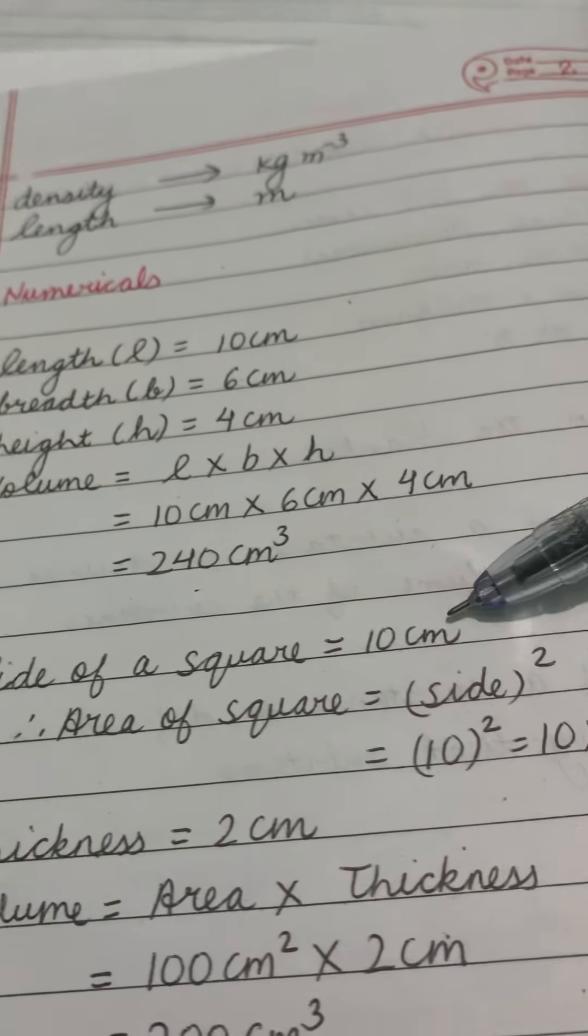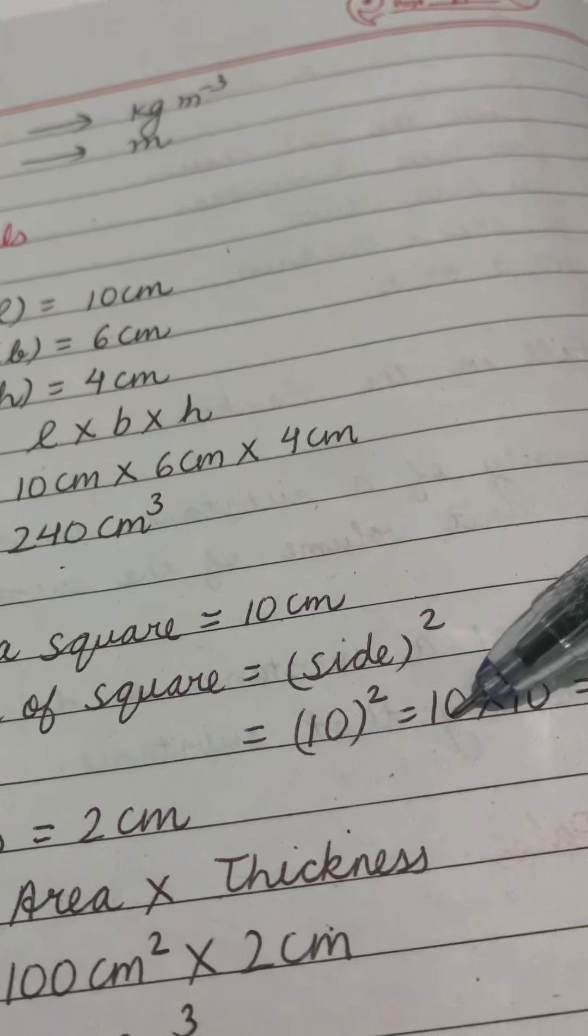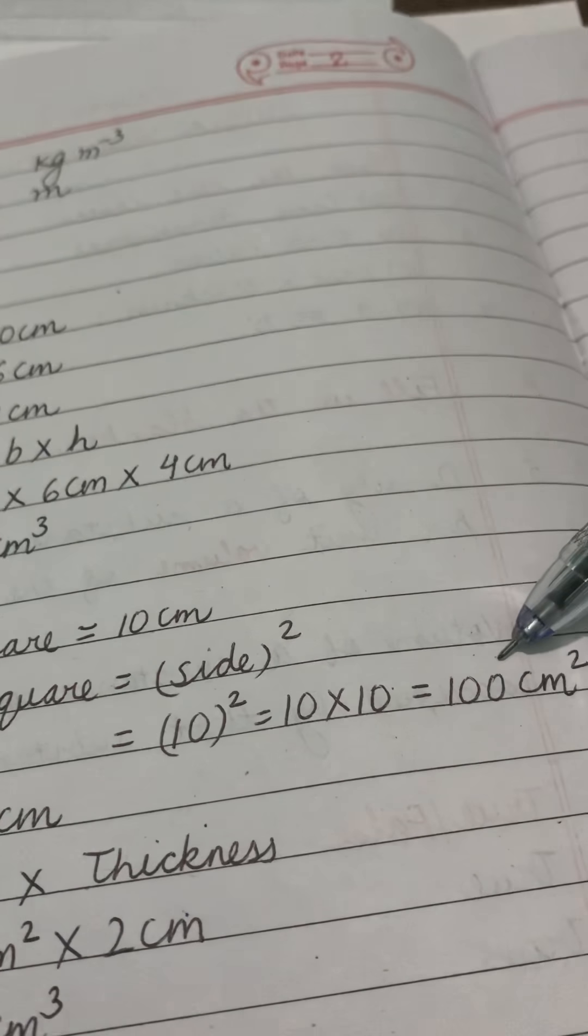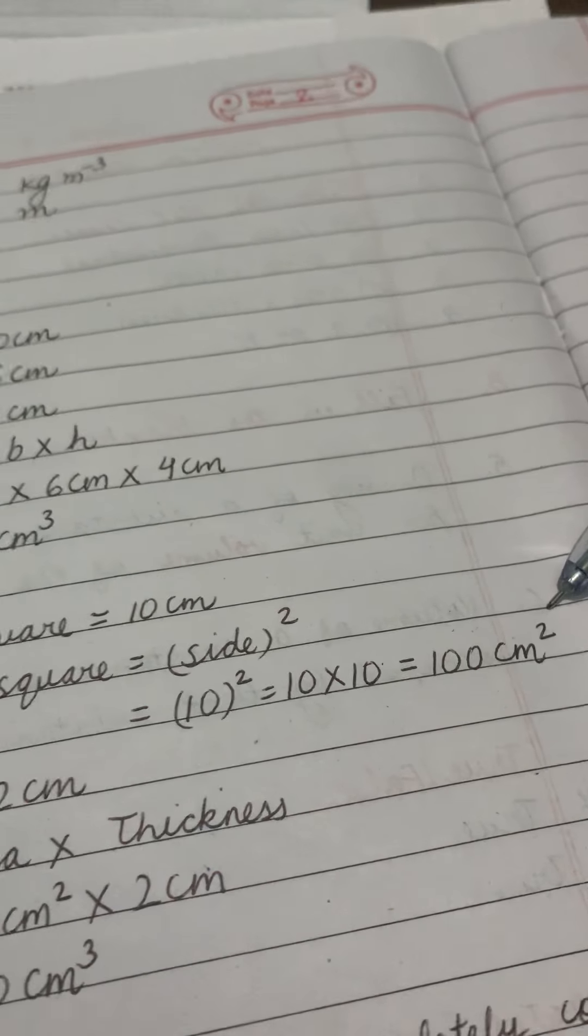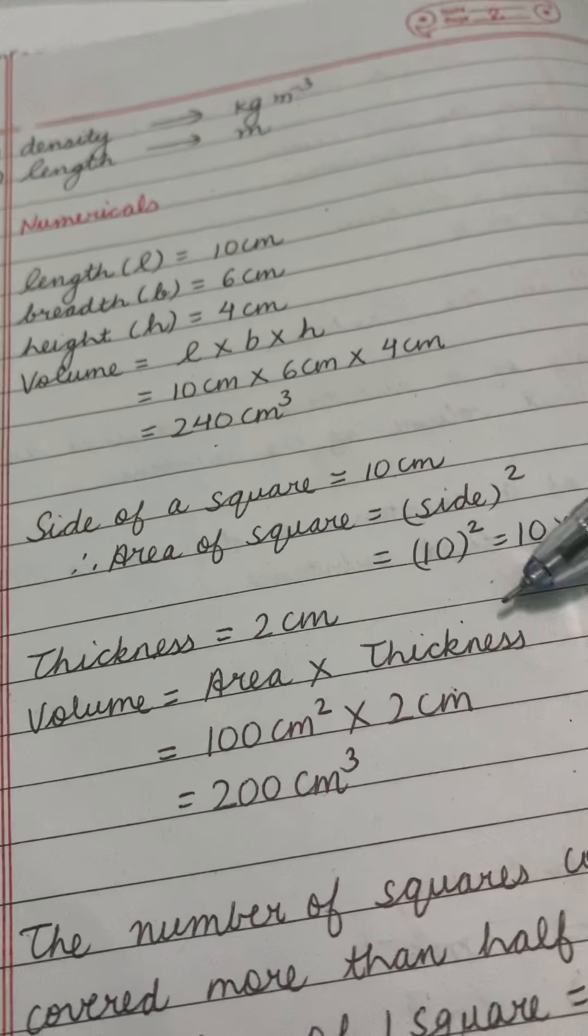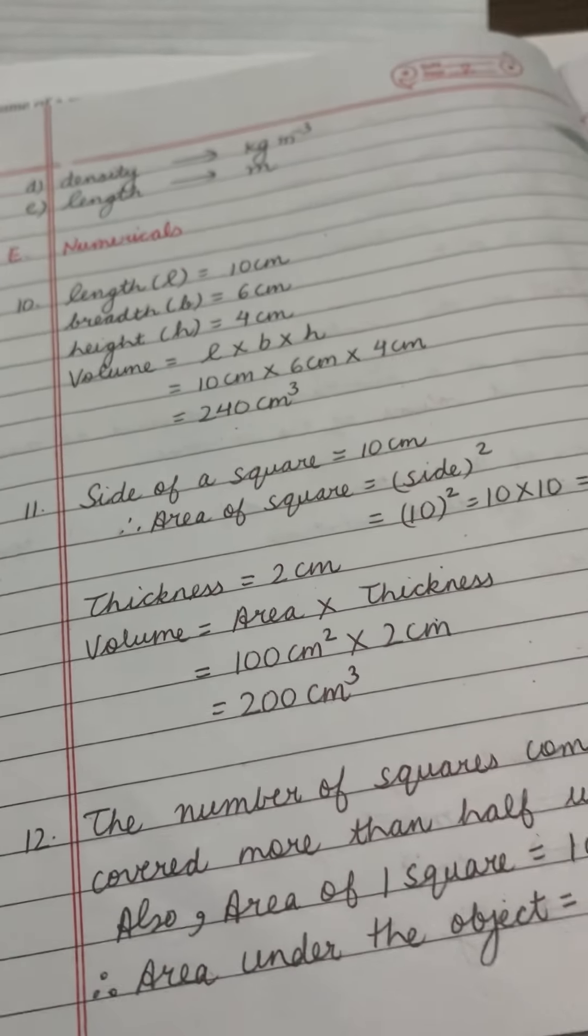Side square means side was given to you is 10 cm so it means 10 square. 10 square means 10 into 10. 10 multiply by 10 that is 100 and it is area so it will be cm square. Now you will multiply area with thickness and you will get the answer. 2 cm are here. 1 cm is here. Total it is cm cube.